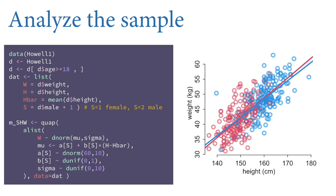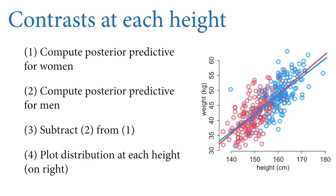The results: plotting the posterior means (just for easy illustration), the regression lines for men and women in this sample have almost exactly the same slope. But this doesn't address our estimate yet — we want the direct effect. We have to compute the difference in expected weight at each height, because that's the direct effect: above and beyond any differences due to height, for men and women of the same height, are they still different weights?